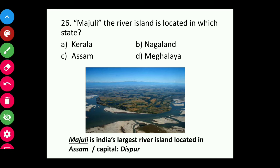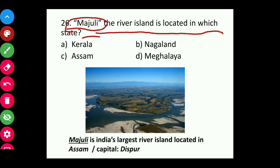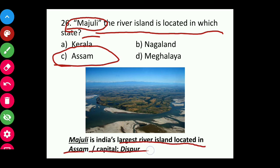Question twenty-six: Majuli, the river island, is located in which state? It is a very easy question. It belongs to our neighboring state, Assam. Majuli is India's largest river island, located in Assam, capital Dispur.